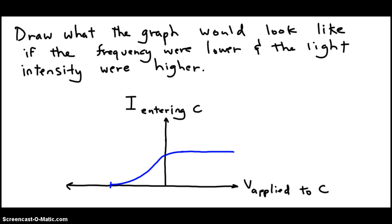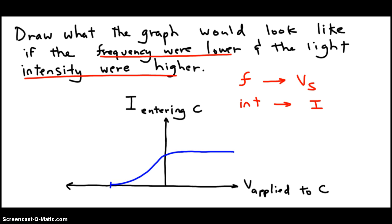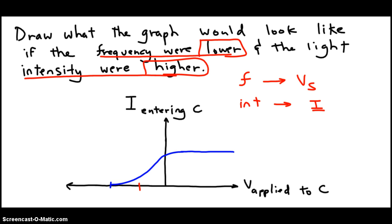Here's the last question as our final exercise. We're shown a graph with data collected in a photoelectric effect experiment. Draw what the graph would look like if the frequency of the light were lower and the light intensity had been higher. If the frequency is lower, then so will be the stopping voltage. If the light intensity were higher, then so would be the current. So let me mark a lower stopping voltage on the graph, and then mark a higher photocurrent. From there, I just connect the points following the same shape as the original curve.